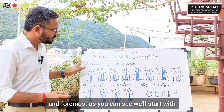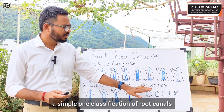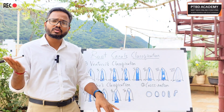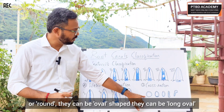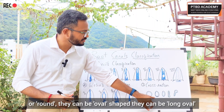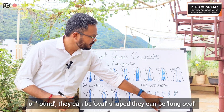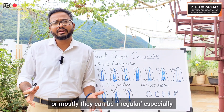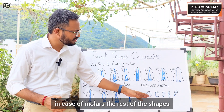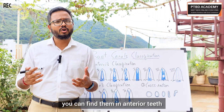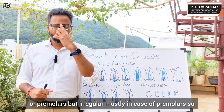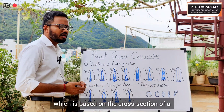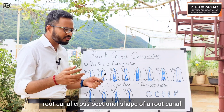Starting with the simplest: classification of root canals based on cross-section. Upon cross-section, root canals can be circular or round, oval shaped, long oval, or flattened and ribbon shaped. They can also be irregular, especially in case of molars. The other shapes can be found in anterior teeth or premolars, but irregular cross-sections are mostly seen in molars.